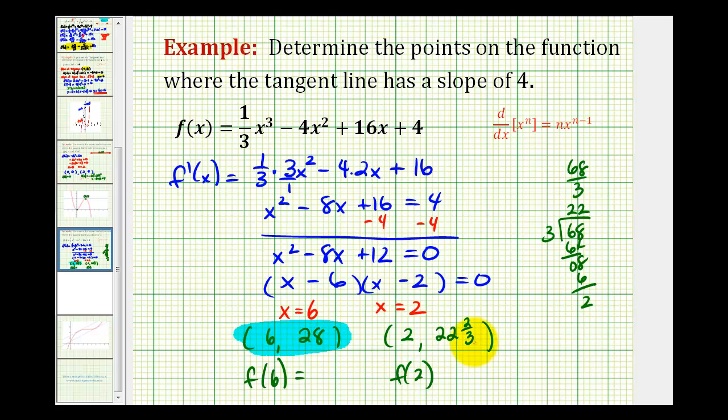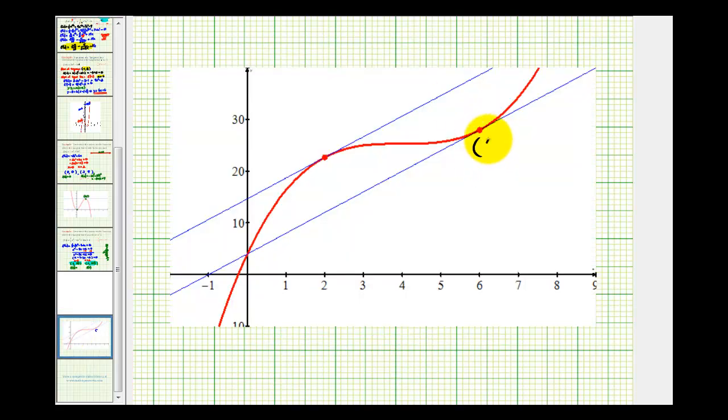So let's check to make sure that at these points, we do have a tangent line with a slope of four. Our first point was 6, 28, that point here. And this point here was two and 22 and two thirds. And notice how at these two points, these two lines are parallel as well, because they both have a slope of four. I hope this was helpful.